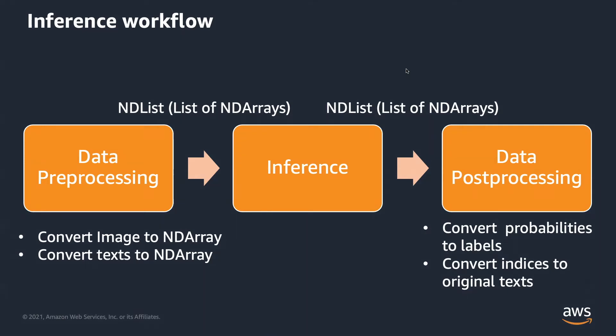We have to convert the image into a bunch of numbers. In the computer world, a color image is represented as a two-dimensional matrix with three channels. Element values range from 0 to 255, representing the RGB — red, green, and blue. We can create ND arrays on top of this matrix. This is called data pre-processing.